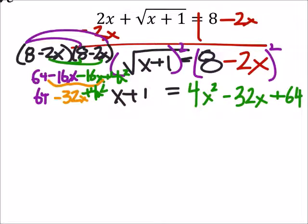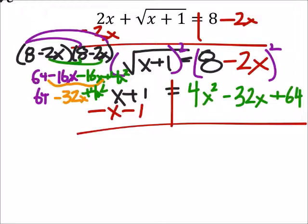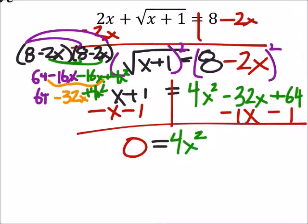Well, since we have a polynomial, we want it to equal 0. So we need to get rid of this x and this 1 from both sides. So I'm going to subtract an x. That would be a 1x and a 1. So now I've got a 0, and this equals, I've got that 4x squared still. But a negative 32x minus another x would give me a negative 33x. And 64 minus 1 is a positive 63.